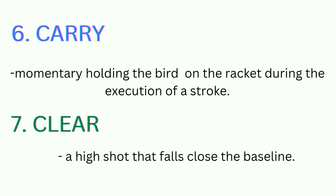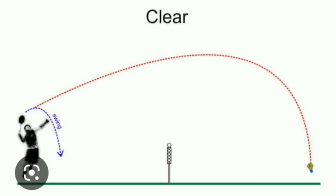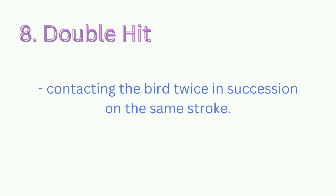Let's see the example of a clear. Here is the picture. The next one is number eight: double hit. Contacting the bird twice in succession on the same stroke.